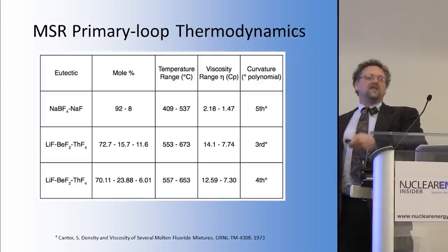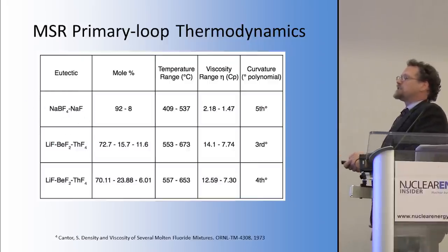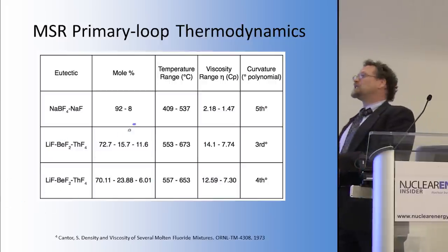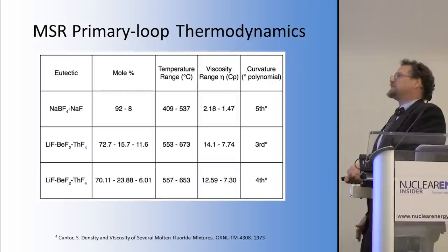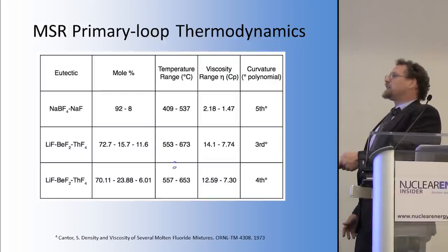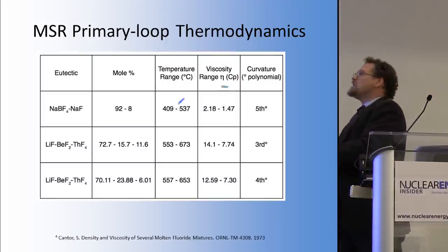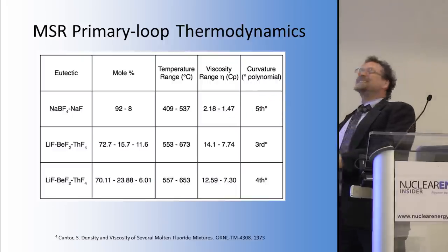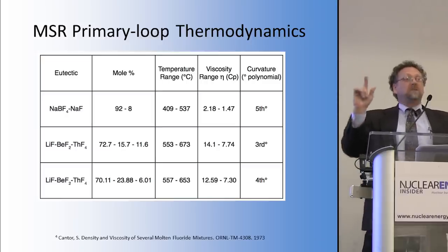We have sodium tetrafluoroborate combined with sodium fluoride. We have FLIBE with thorium tetrafluoride, and the same combination with a very slight difference in mole percent ratio. I had to condense this dramatically from an outstanding paper written by Stanley Cantor. The temperature range was kept as close as possible across variants, but look at the change in viscosity — 2.8 to 1.47 — which makes sense as you go up in temperature. This viscosity curve follows a fifth-order polynomial; it does not look anything like a linear curve.